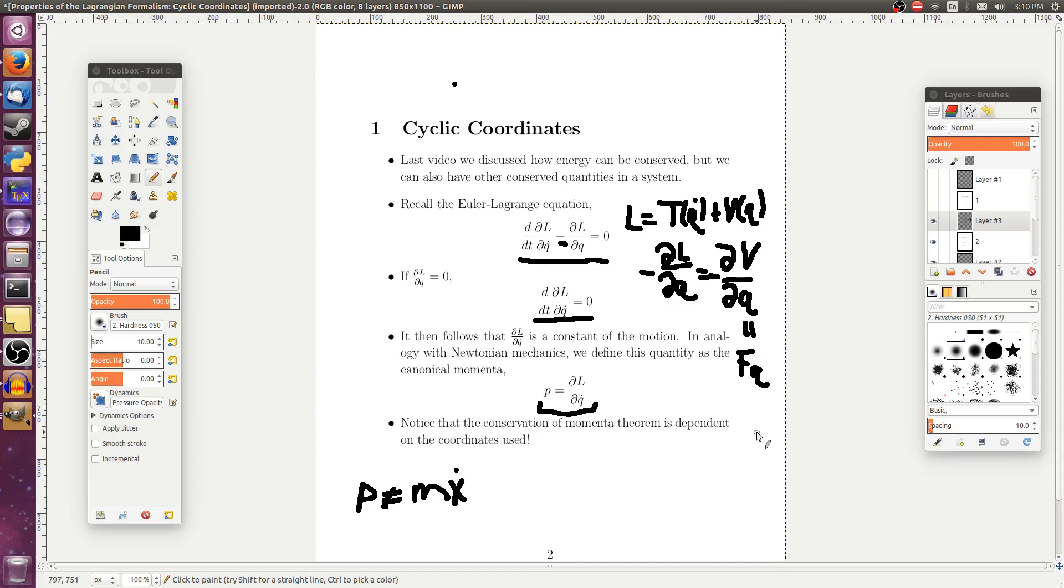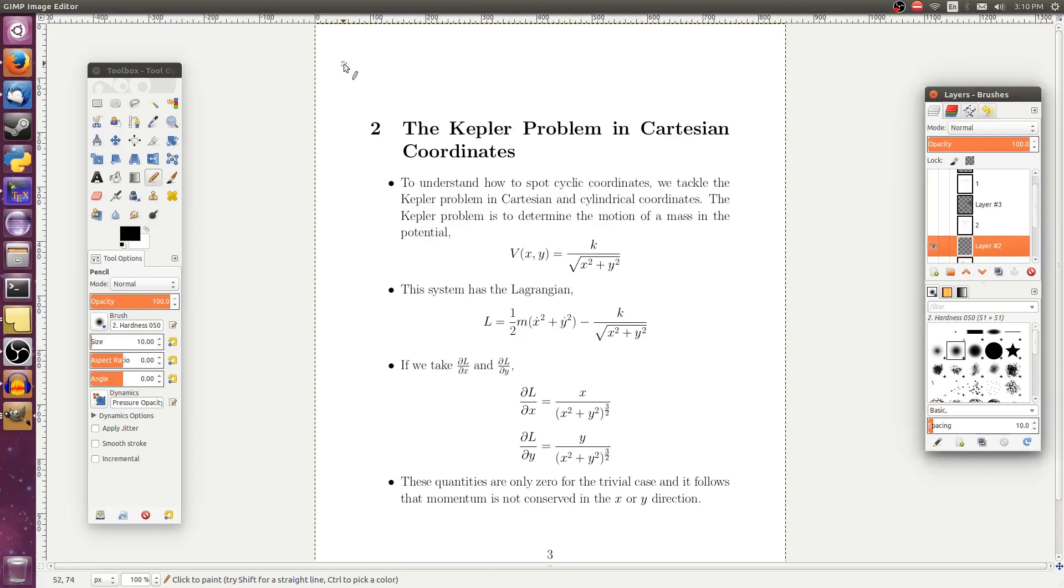So next, we're going to talk about an example of this. Alright, so at the very beginning of the video, I said we're going to tackle the Kepler problem. And we're going to do it in Cartesian coordinates first, and then cylindrical coordinates to see how changing your coordinates can actually lead to simplification of the problem, which is going to be very useful.